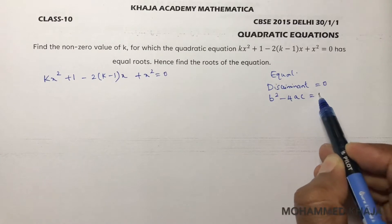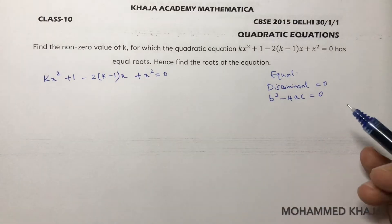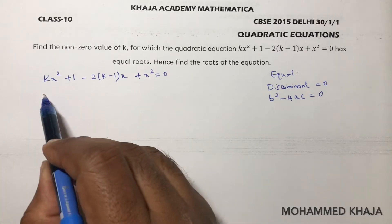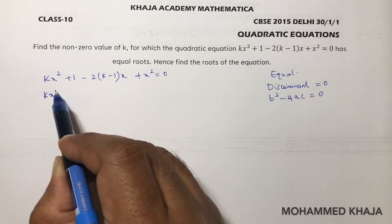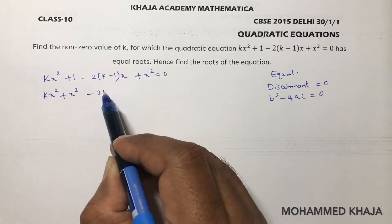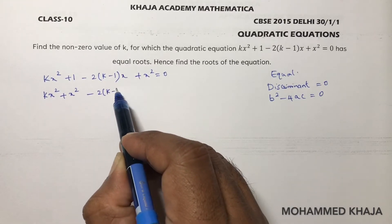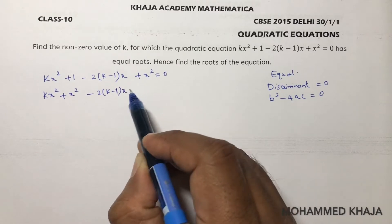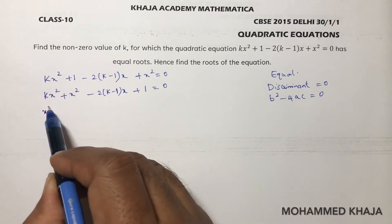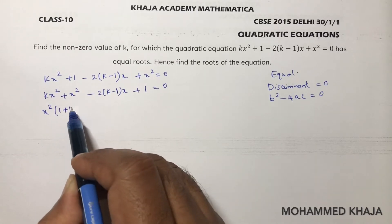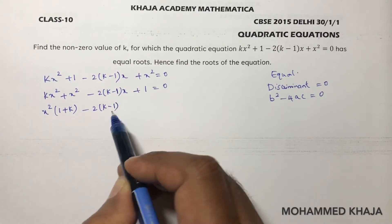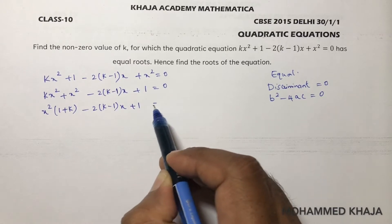The discriminant formula is b² - 4ac = 0. But if you observe this question, it is not in standard form, so first change it into standard form. So kx² + x², then write (k-1)x + 1 = 0. Now if you take x² common: 1 + k, minus 2(k-1)x + 1 = 0.